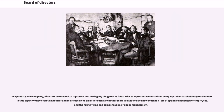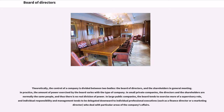In a publicly held company, directors are elected to represent and are legally obligated as fiduciaries to represent owners of the company, the shareholders. In this capacity they establish policies and make decisions on issues such as whether there is a dividend and how much it is, stock options distributed to employees, and the hiring and compensation of upper management. Theoretically, the control of a company is divided between two bodies, the board of directors and the shareholders in general meeting. In practice, the amount of power exercised by the board varies with the type of company.